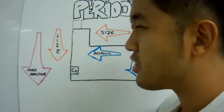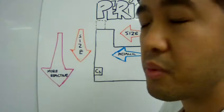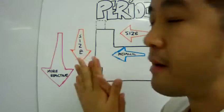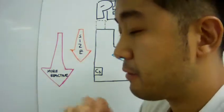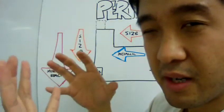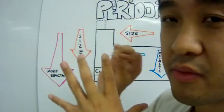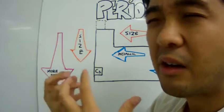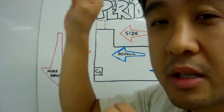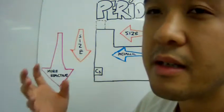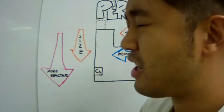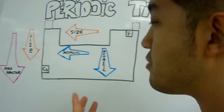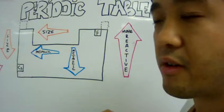Now let's talk about reactivity. For metals, reactivity increases as you go down the group — especially for the group 1 elements. The reason is that as you go down the group, you add more energy levels, which means that one valence electron is so far away from the nucleus that it is susceptible to being taken out. The energy needed to remove that valence electron is really low — lower. So the reactivity goes up as you go down the group for metallic elements.